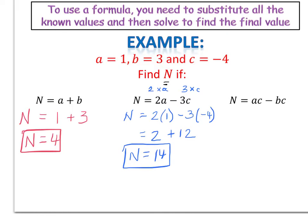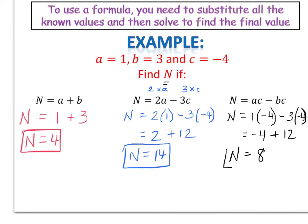Example 3: n equals ac minus bc. Substituting a equals 1, b equals 3, and c equals negative 4, we get n equals 1 times negative 4, minus 3 times negative 4. Working that out: 1 times negative 4 is negative 4, and negative 3 times negative 4 is positive 12. Negative 4 plus 12 gives n equals 8. So there are three examples where we substituted known values into a formula to work out the unknown value.